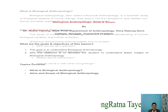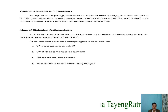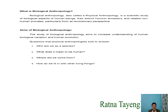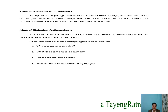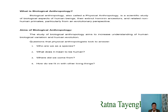To begin with, what is biological anthropology? Biological anthropology, also called physical anthropology earlier, is a scientific study of the biological aspects of human beings, their existing hominid ancestors, and related non-human primates, studied particularly from an evolutionary perspective. The aims of physical anthropology are to increase our understanding of human biological variation and evolution.